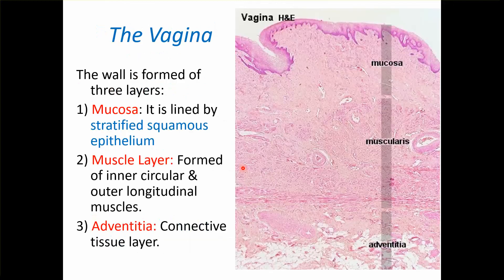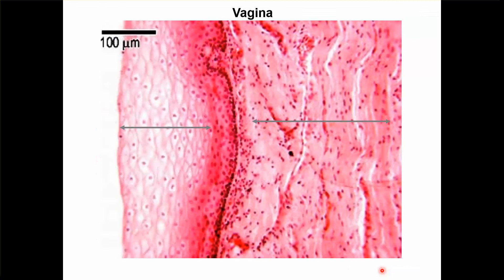Now coming to vagina. There are three layers: the mucosa lined with stratified squamous epithelium, then the muscle layer formed with inner circular and outer longitudinal, and then adventitia which is connective tissue. You can see the stratified squamous epithelium.